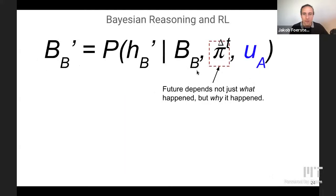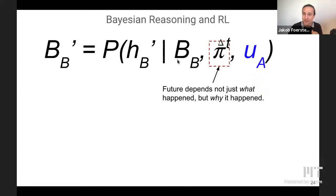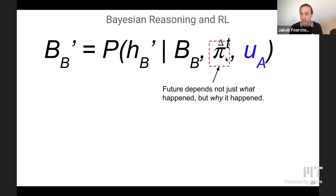In an MDP, I only care about what happened — the state and action provide the conditional distribution for the next state P(S'|S,A). In contrast, in a DECPOMDP, Bob's next belief conditions not just on his previous belief and Alice's action, but also on the policy that generated the action. If we're in a DECPOMDP setting, my policy pi acts as an observation function for other agents, because if they can observe my action, they need to know the mapping from observations of one agent to actions of the other.